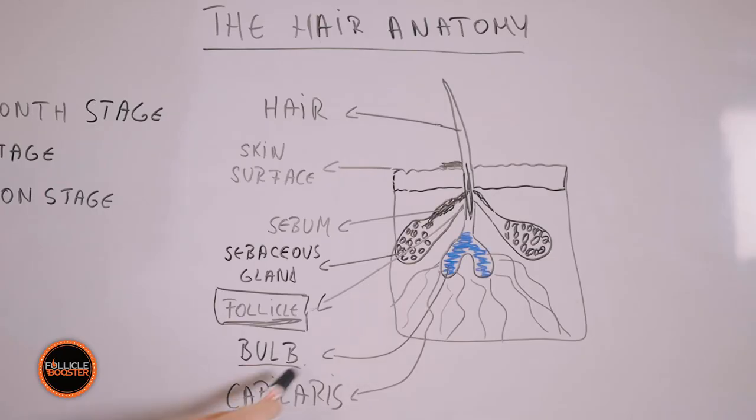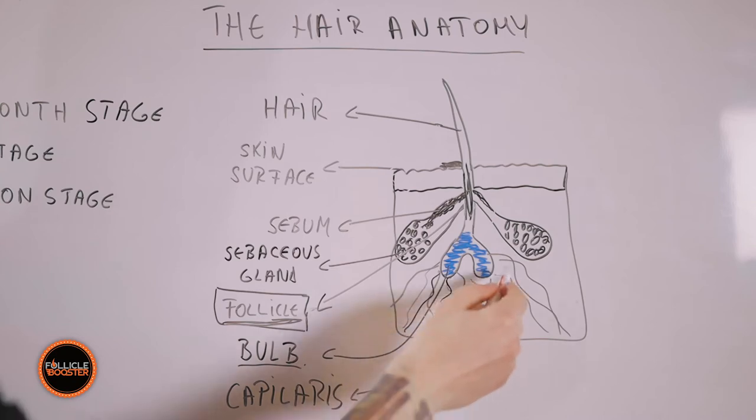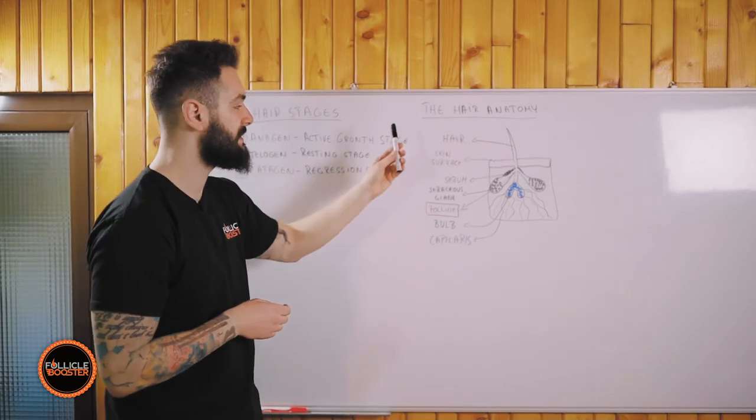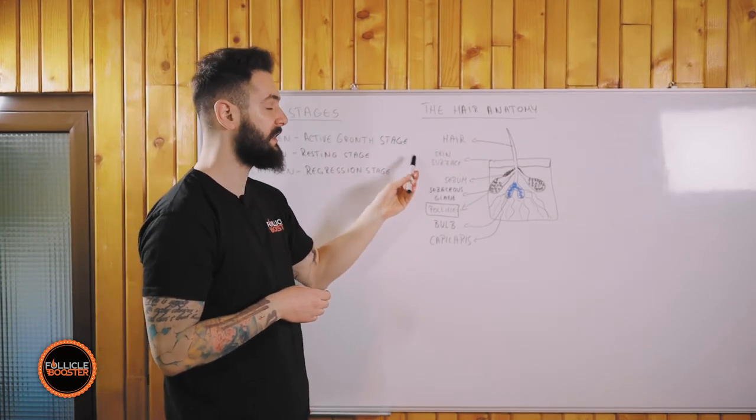After that is the capillaries. The capillaries are small tiny veins that actually nourish and deliver all the nutrients to the bulb. So basically this is a short anatomy of your hair growth, anything that you need to understand for your healthy hair growth.